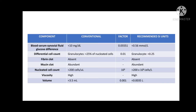For tests done on synovial fluid: the blood serum to synovial fluid glucose difference normal result will be less than 10 milligrams per deciliter, using conversion factor 0.05551. In the differential cell count, granulocytes are detected with less than 25% of nucleated cells, using conversion factor 0.01. Fibrin clot in normal synovial fluid is absent — it must be liquid with no clot.